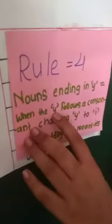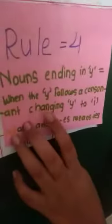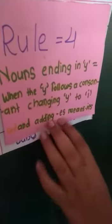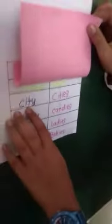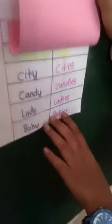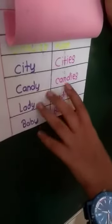Rule number 4 is, nouns ending in Y, when the Y follows a consonant, change Y into I and add ES, meaning IES. For example: city becomes cities, candy becomes candies, lady becomes ladies, baby becomes babies. Y is converted into IES.